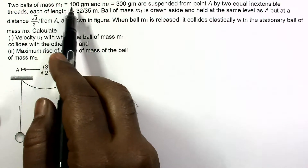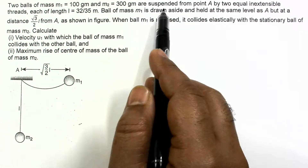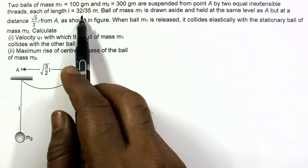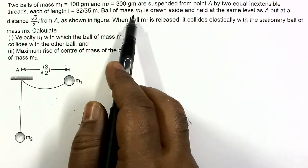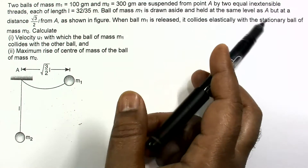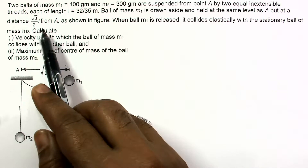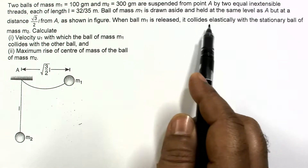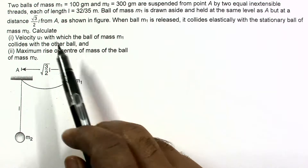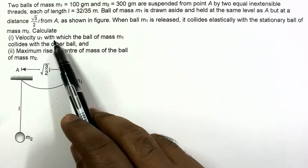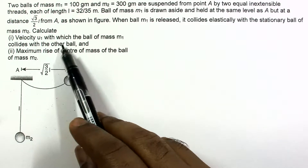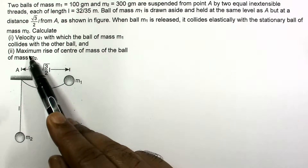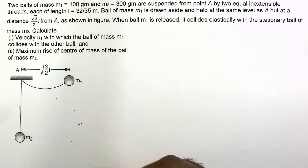In this question, two balls of mass M1=100g and M2=300g are suspended from point A by two equal inextensible threads each of length L=32/35m. Ball M1 is drawn aside and held at the same level as A, but at a distance √3L/2 from A. When ball M1 is released, it collides elastically with the stationary ball M2. Calculate the velocity u1 with which M1 collides, and the maximum rise of the center of mass of ball M2.